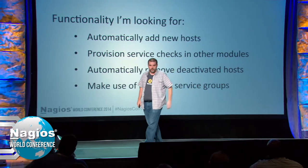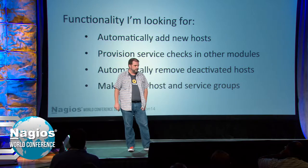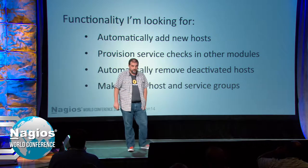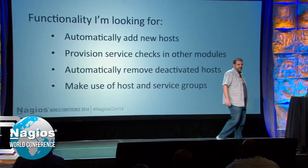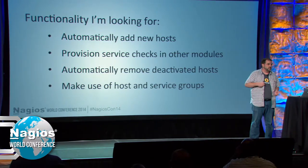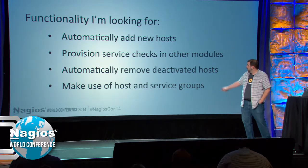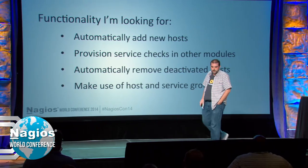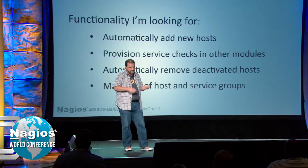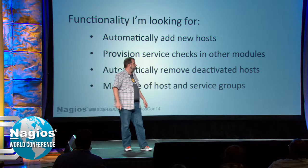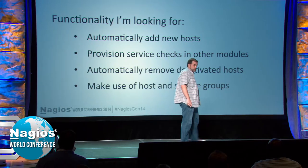There are several Nagios modules on the Puppet Forge, and I could have used one for Nagios management. But Nagios and Puppet are both extremely flexible, and I didn't find one suited to how I wanted to work. The functionality I was looking for: automatically add new hosts when they check into the Puppet server, provision service checks in other Puppet modules, automatically remove hosts when deactivated, and make use of host and service groups.